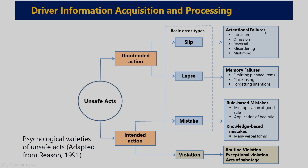In slip, attentional failures happen — intrusion, omission, reversal, mistiming, and misunderstanding. In lapse, memory failures occur — omitting planned items, place losing, and forgetting intentions. In mistake, there are rule-based mistakes (misapplication of a good rule or application of a bad rule) and knowledge-based mistakes (where the person applies whatever knowledge they have in the wrong way). The basic three types of error are slip, lapse, and mistake.